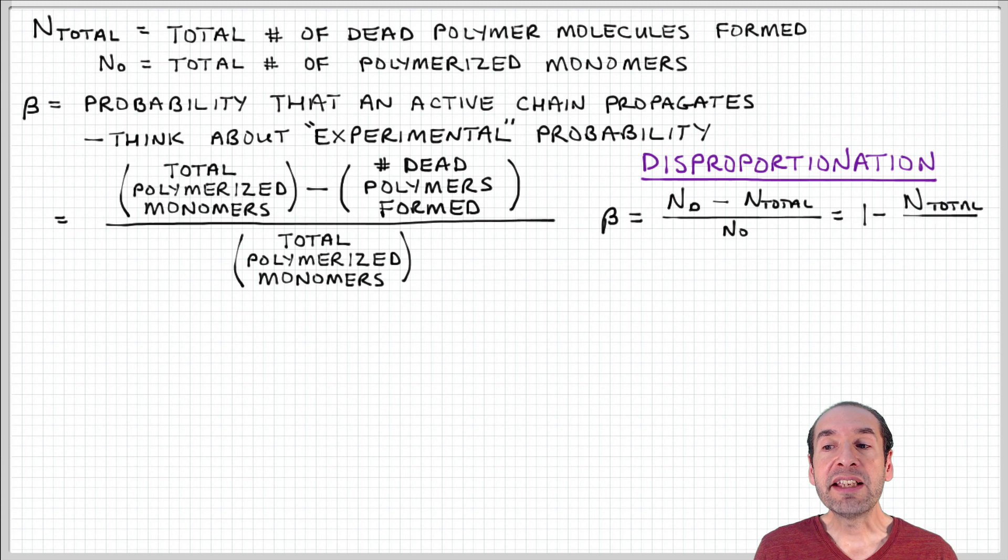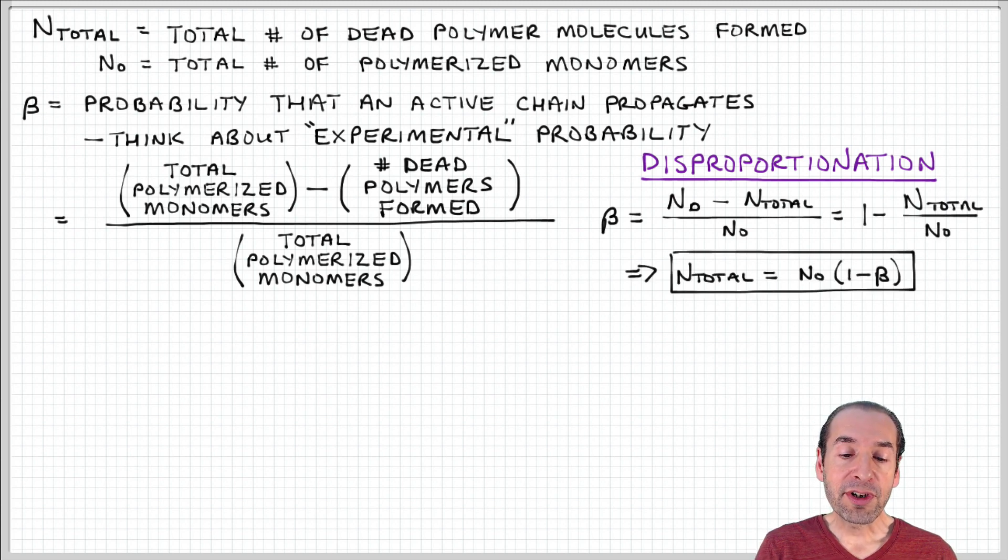Let's see how we would apply this in the case of disproportionation termination. So the total number of polymerized monomers I've defined in terms of this term n-naught. And the number of dead polymers formed is n-total. So I can substitute these in, and I find that beta equals 1 minus n-total over n-naught.